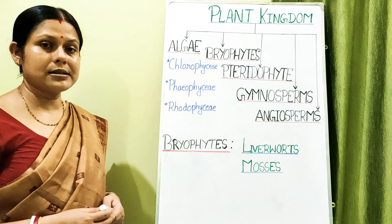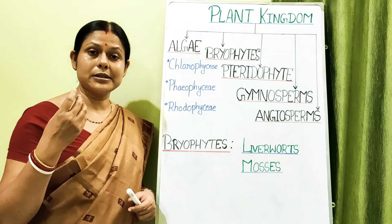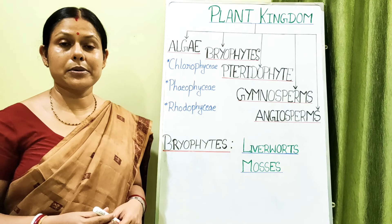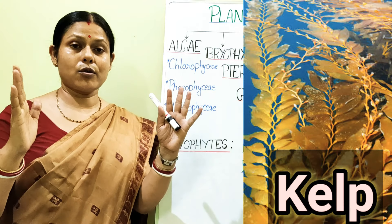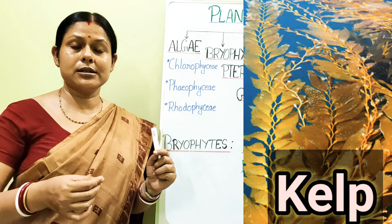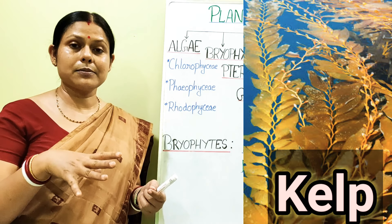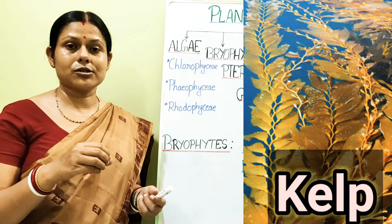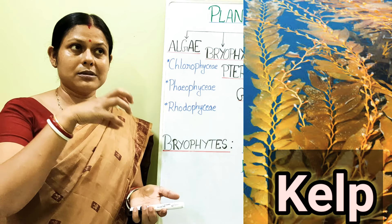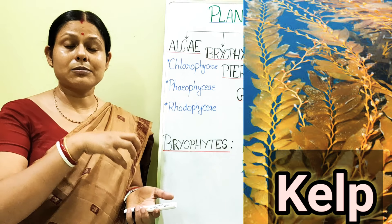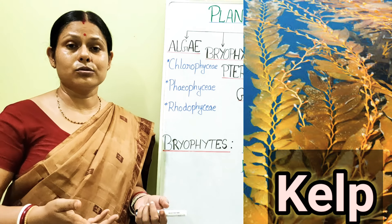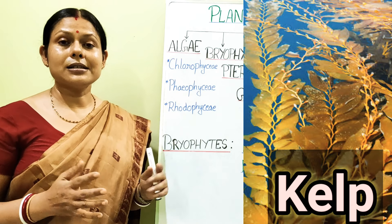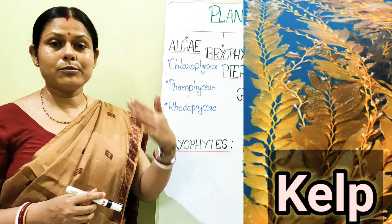Regarding Phaeophycean members, the plant body appears more advanced compared to Chlorophycean members. They have a leaf-like frond, a stipe or stem, and the stipe ends in a root-like structure called a holdfast — not a true root, but used to cling to substrata or rocks under the ocean, since these are mostly marine organisms.